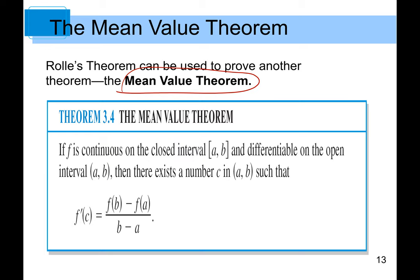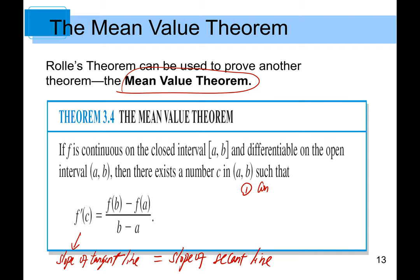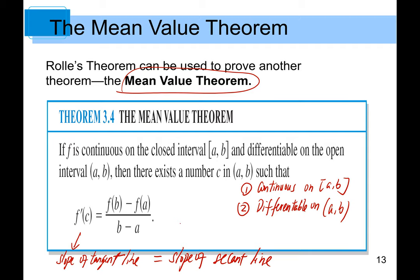The slope of the tangent line at x = c equals the slope of the secant line — that's how you interpret this. The two conditions are: continuous on the closed interval [a, b], and differentiable on the open interval (a, b). So the slope of the tangent line equals [f(b) - f(a)] / (b - a).